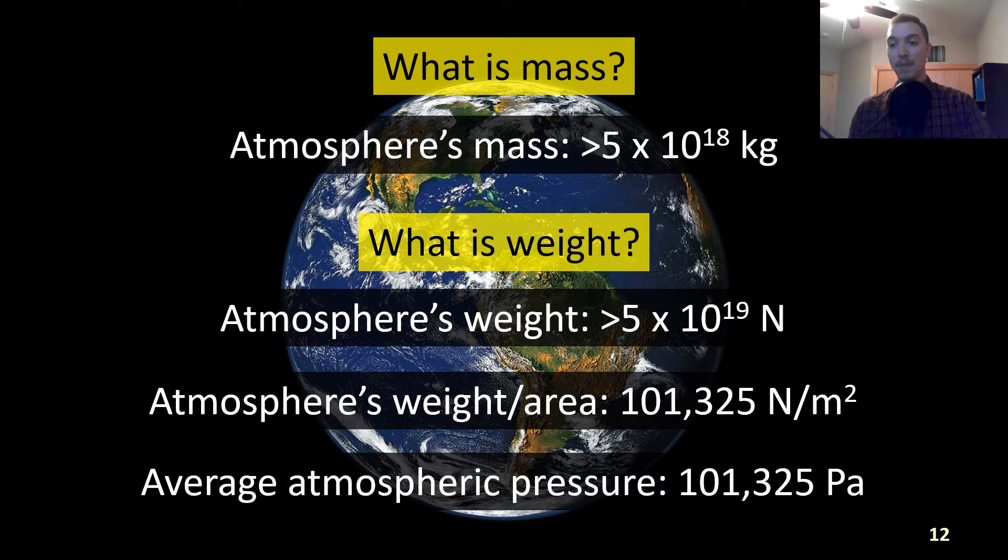To take this a step further, we like to think of force normalized over a given area. The weight of the atmosphere divided by the surface area of Earth equals 101,325 newtons per meter squared. Pressure is just a unit that describes the force or weight of an object applied over a given area. We like to use units like pascals or millibars to describe that pressure. The average atmospheric pressure in pascals is still 101,325 pascals.